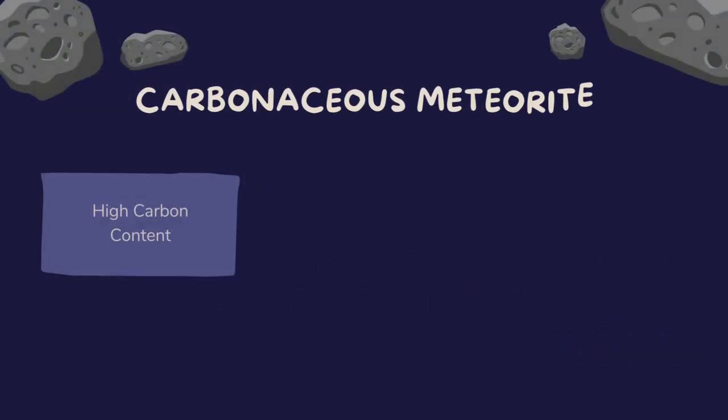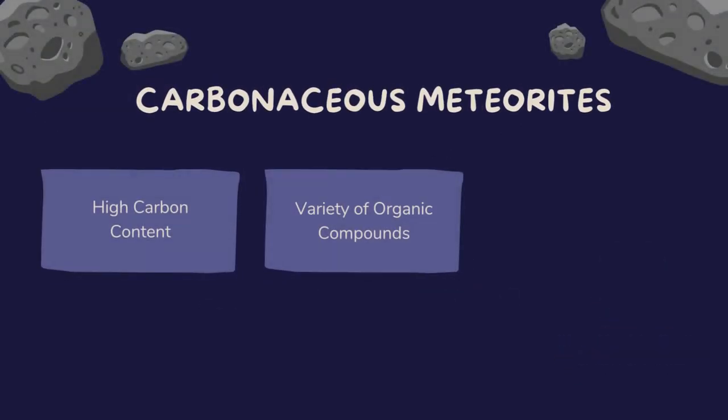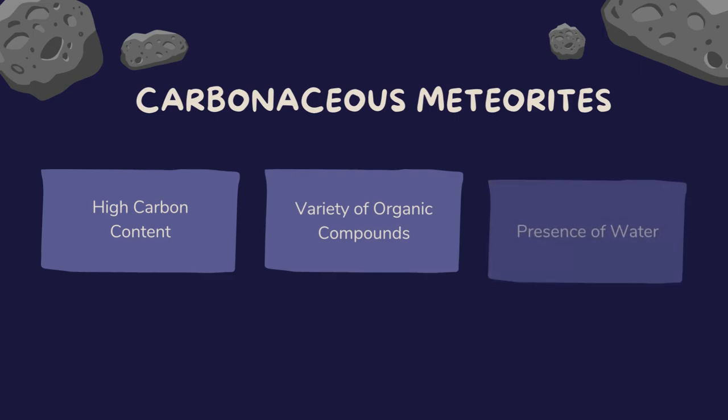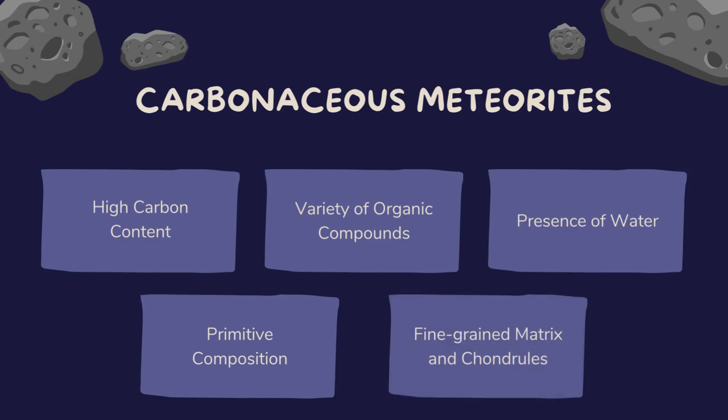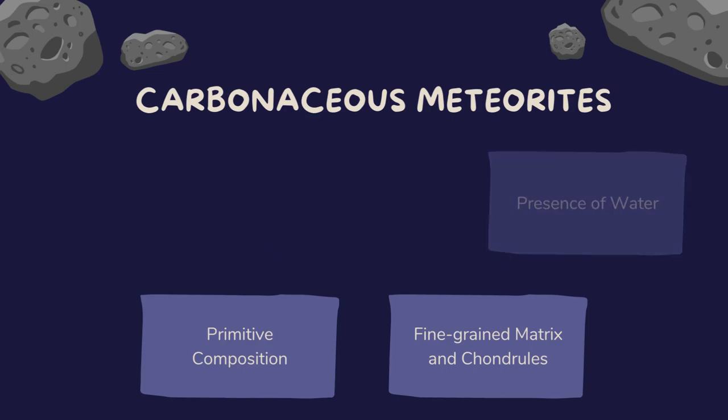Carbonaceous meteorites are rich in carbon and contain a variety of organic compounds, water, and other volatiles. These meteorites are some of the most primitive and ancient materials in the solar system, providing crucial insights into the early stages of planetary formation and the origins of organic matter.